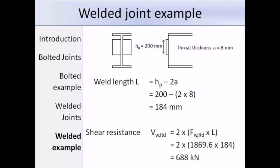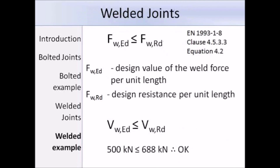The weld length is the plate height of 200 mm minus two times the throat thickness of 8 mm, giving 184 mm. The total shear resistance of the weld is two times the design resistance per unit length multiplied by the weld length, which equals 688 kN. Since the design shear force of 500 kN is less than the design shear resistance of 688 kN, the weld is suitable. This example concludes the e-lecture on joints.